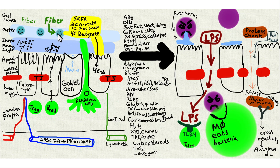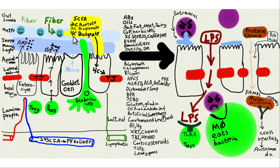Gut bacteria take fiber and convert it into short-chain fatty acids, abbreviated SCFA. The typical fatty acids in meat are long-chain fatty acids — palmitic acid is C16, for example. The gut bacteria make acetate (2-carbon), propionate (3-carbon) — these are all carboxylic acids, that's why they end in the '-ate' ending. And butyrate, which is 4-carbon. The 2-carbon and 3-carbon fatty acids go through the portal vein to the liver.